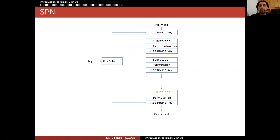This is the confusion layer, this is the permutation layer, and this is the key addition layer. One round consists of these three layers. You repeat it many times, and at the end you obtain the ciphertext. As you can see, initially at the beginning and at the end, you have the AddRoundKey.